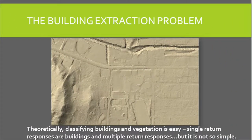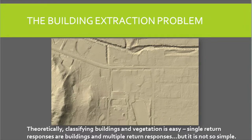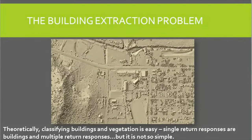Theoretically, getting at the building information within that LIDAR cloud shouldn't be too difficult because surfaces that are soft, like vegetation, have multiple returns. But buildings are hard targets and should have just a single return. So you should just be able to sort out all the unclassified data that has just a single return, and you should have your building information.